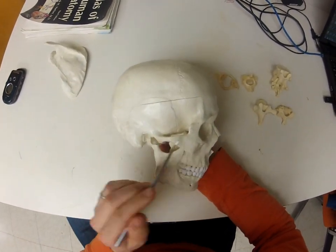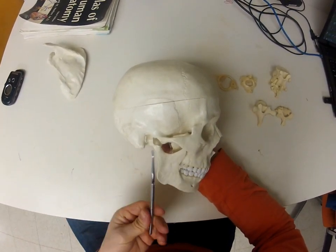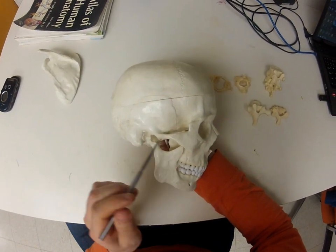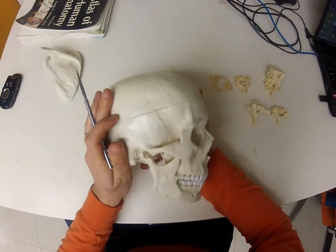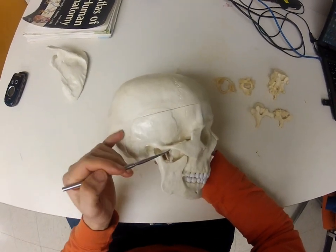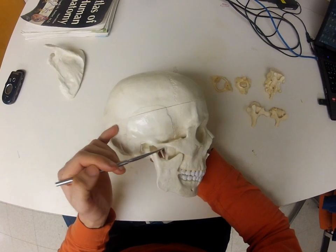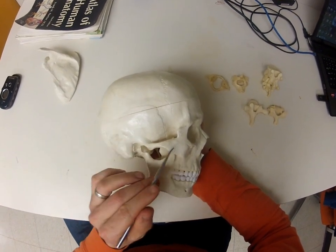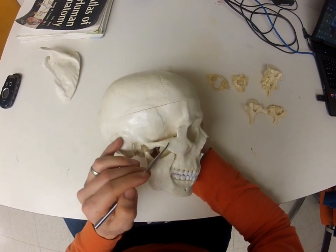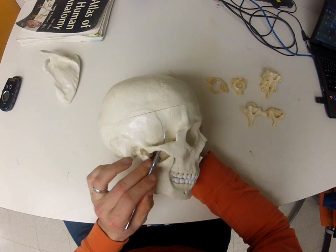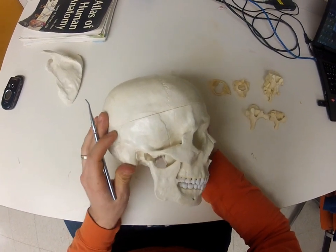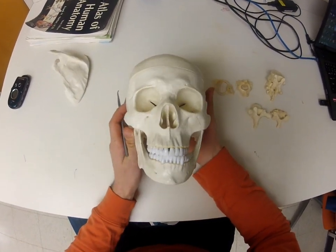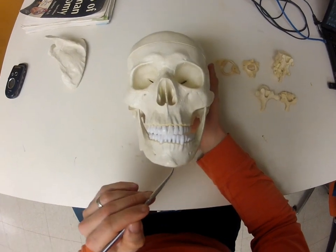In this area we have an arch called the zygomatic arch. It's formed by a ramus off of the temporal bone and a ramus off of the zygomatic bone - they join together to form that zygomatic arch.